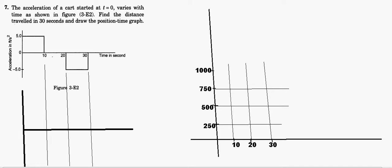Hello friends, let's see the next problem — question number seven. This is a very important problem with a very good concept. The question is: the acceleration of a cart started at t = 0 varies with time as shown in the figure. Find the distance traveled during 30 seconds and draw the position-time graph.